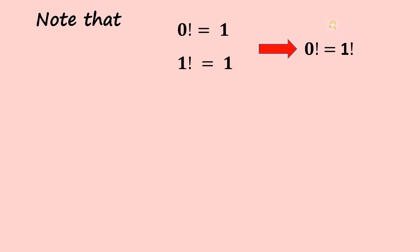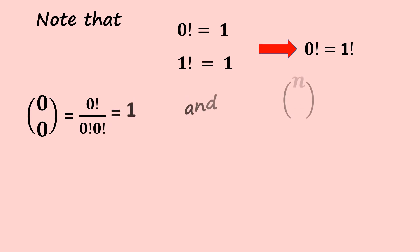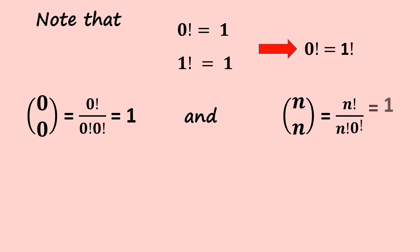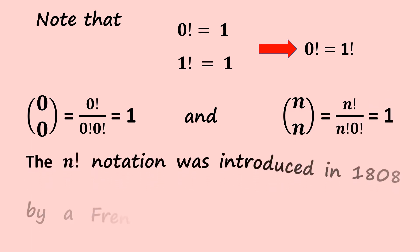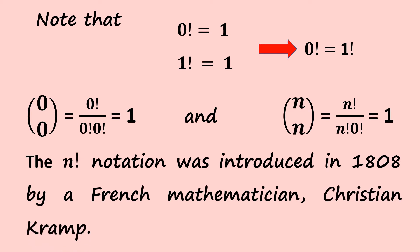Therefore zero factorial equals one factorial. When we have zero choose zero, it will be zero factorial divided by zero factorial times zero factorial, which is one. And n choose n will be n factorial divided by n factorial times zero factorial, which is also one. The n factorial notation was introduced in 1808 by French mathematician Christian Kramp.